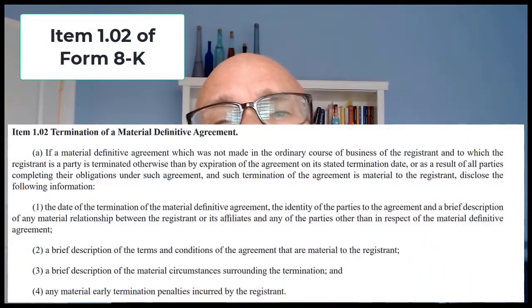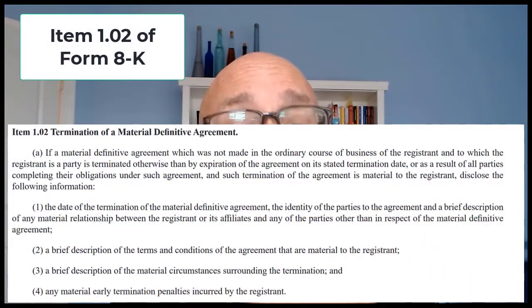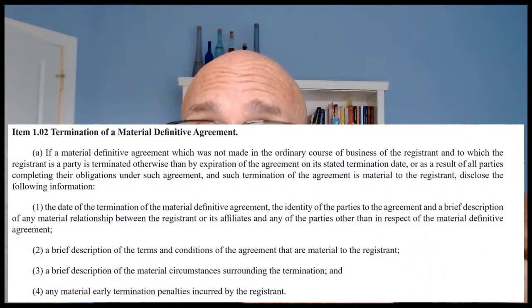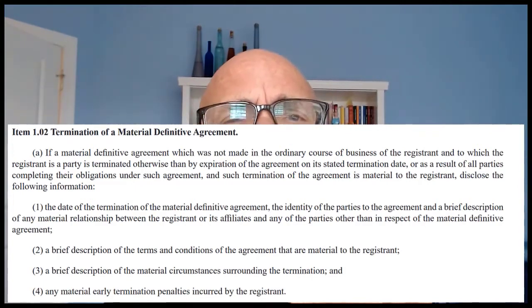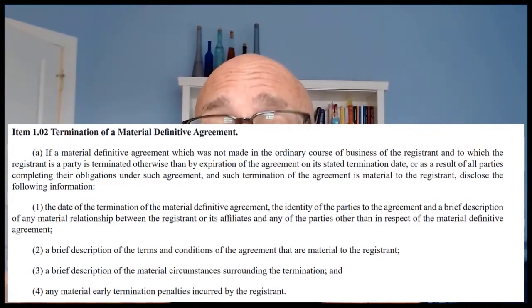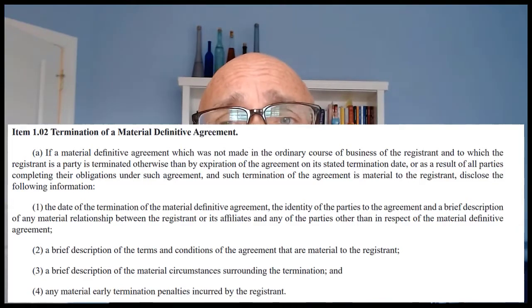I'm Brock Romanek. So, triggers: an Item 1.02 Form 8-K is required if a material non-ordinary course agreement is terminated — otherwise than by the expiration of the agreement on its stated termination date, or as a result of all parties completing their performance under the agreement — and the termination is material to the company.